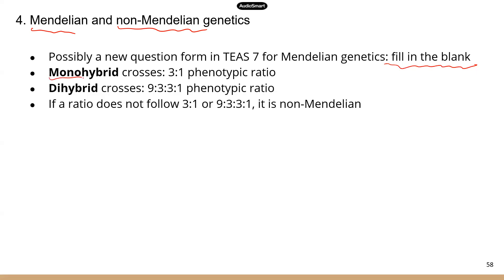Now for monohybrid, that means we're talking about just one trait. It could be the height of the plant, could be the color of the seed — we are just talking about one trait. If it's a monohybrid, then this follows a three-to-one phenotypic ratio, which means the three is going to be that dominant trait.